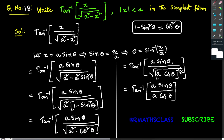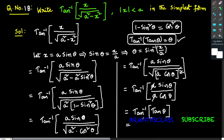We now have a sine theta remaining in the numerator and a cos theta remaining in the denominator. The a in the numerator and the a in the denominator cancel, giving tan inverse of sine theta divided by cos theta, which equals tan inverse of tan theta. From the properties of inverse trigonometric functions, tan inverse of tan theta equals theta.